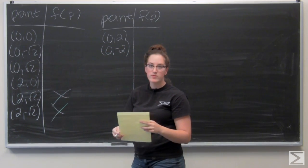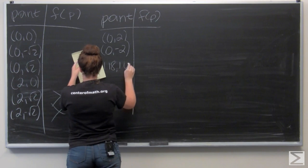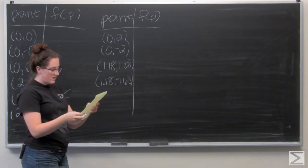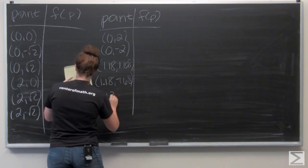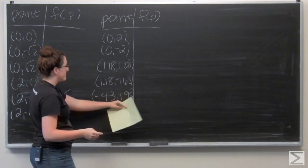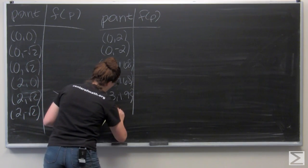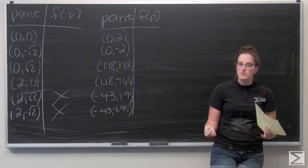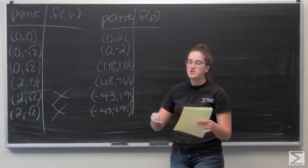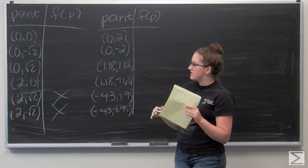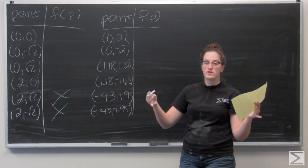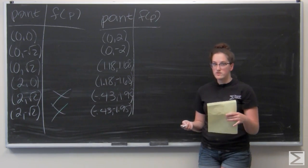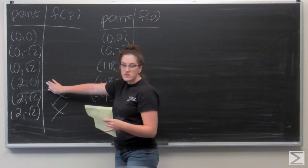This gives six new points to add to the chart: (0, 2), (0, -2), (1.18, 1.68), (1.18, -1.68), (-0.43, 1.95), and (-0.43, -1.95). I also need to check the boundary of g(x) where x equals negative 2 and x equals positive 2. Using y squared = 4 minus x squared, both give y equals 0. The point (2, 0) is already on the list, so I just add (-2, 0).